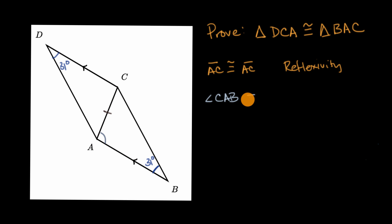CAB is congruent to angle ACD. Angle ACD. Because they are alternate interior angles where a transversal intersects two parallel lines.